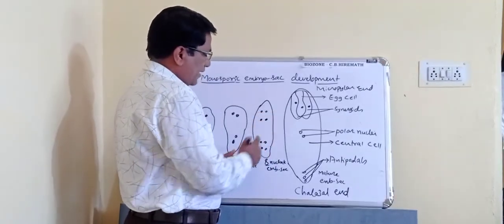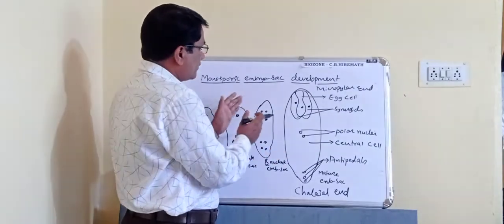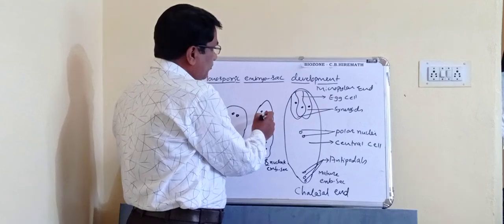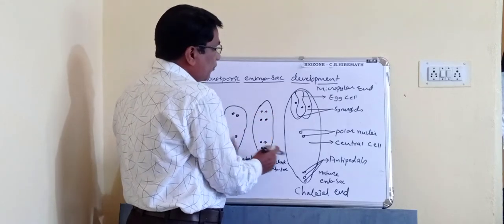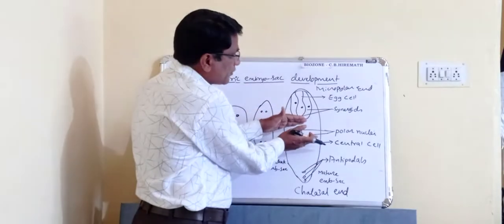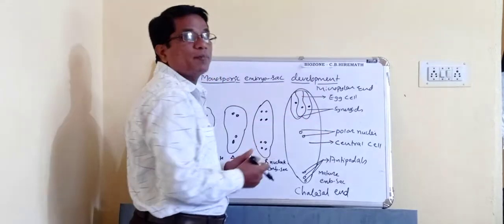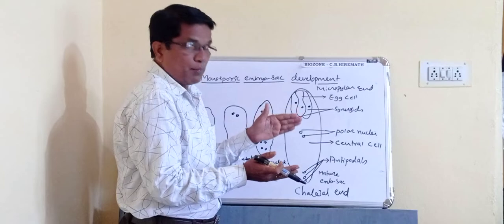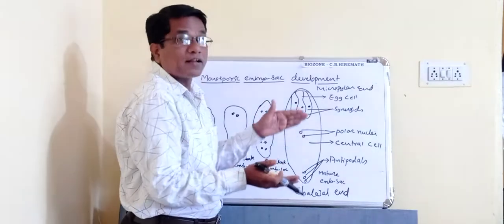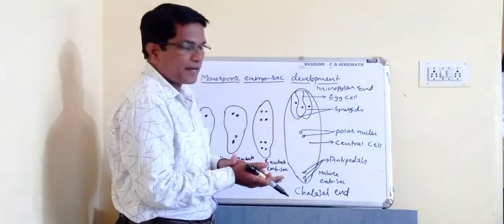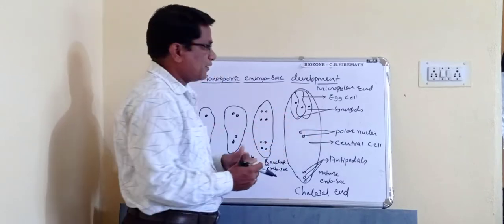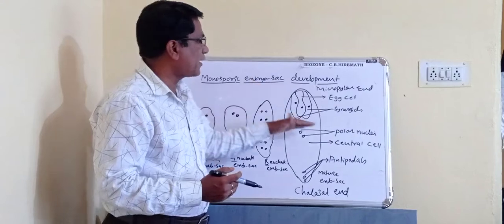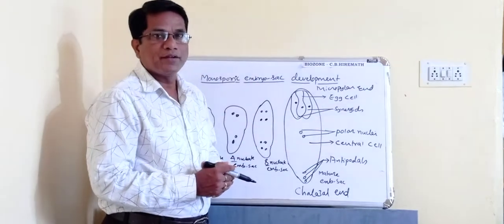In the eight-nucleated embryo sac diagram, one nucleus from one pole and one nucleus from the other pole move to the center and become the polar nuclei — because they came from the two polar regions. This is the micropylar pole and this is the chalazal pole, which is why they are called polar nuclei.